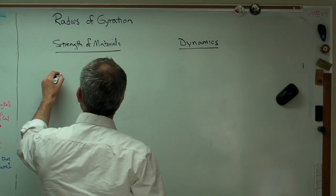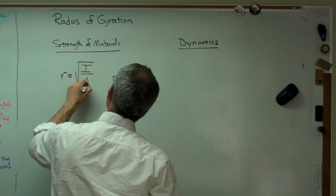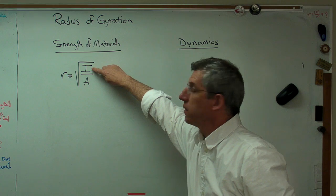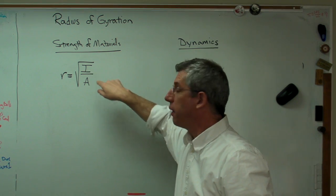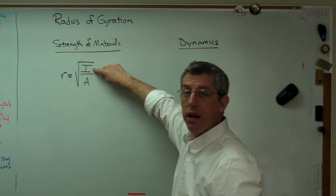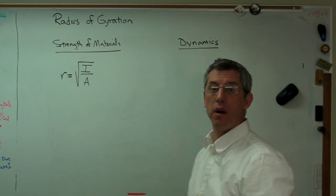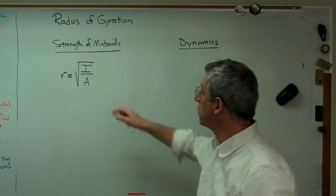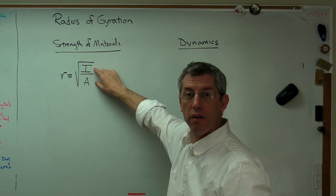So for strength of materials, the radius of gyration is written out as the square root of I over A, where that's length to the fourth over length squared for the units. Square root of that gives you length, so it would be a radius. This is the area moment of inertia and this is the area of some object. In almost all cases, we're looking at buckling. So this is the area of a column.